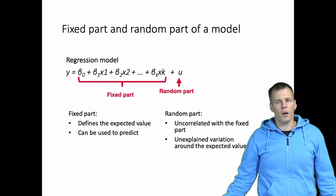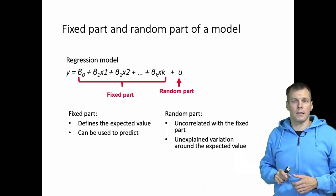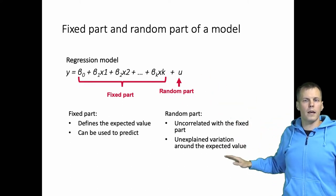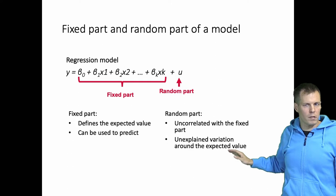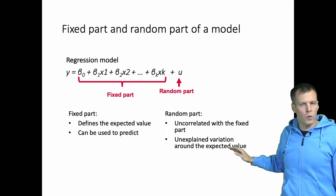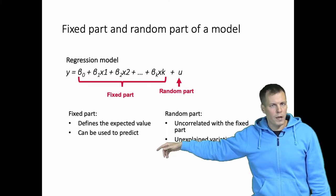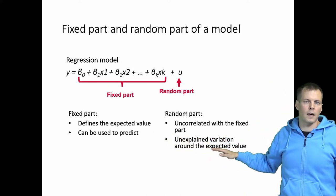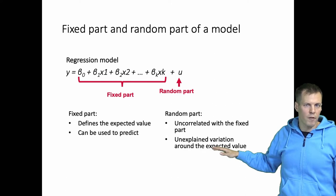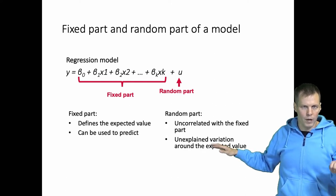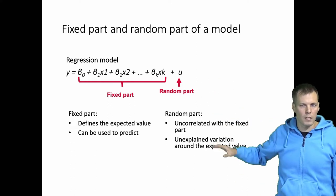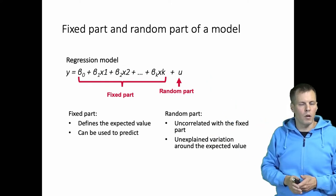The random part is uncorrelated with the fixed part — that's an assumption — and it explains the variation around the regression expected value. Whereas in the fixed part we can predict a specific value, in the random part we can only say that the observations vary around the predicted value, but we can't give any specific value for any observation based on this model. That is just variation that we estimate.